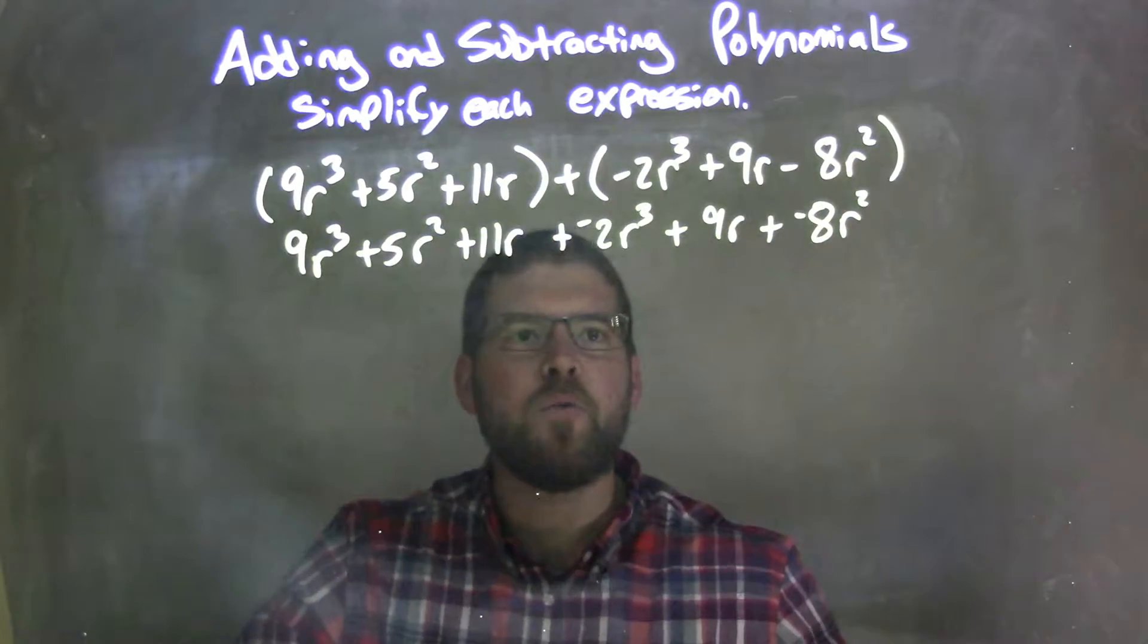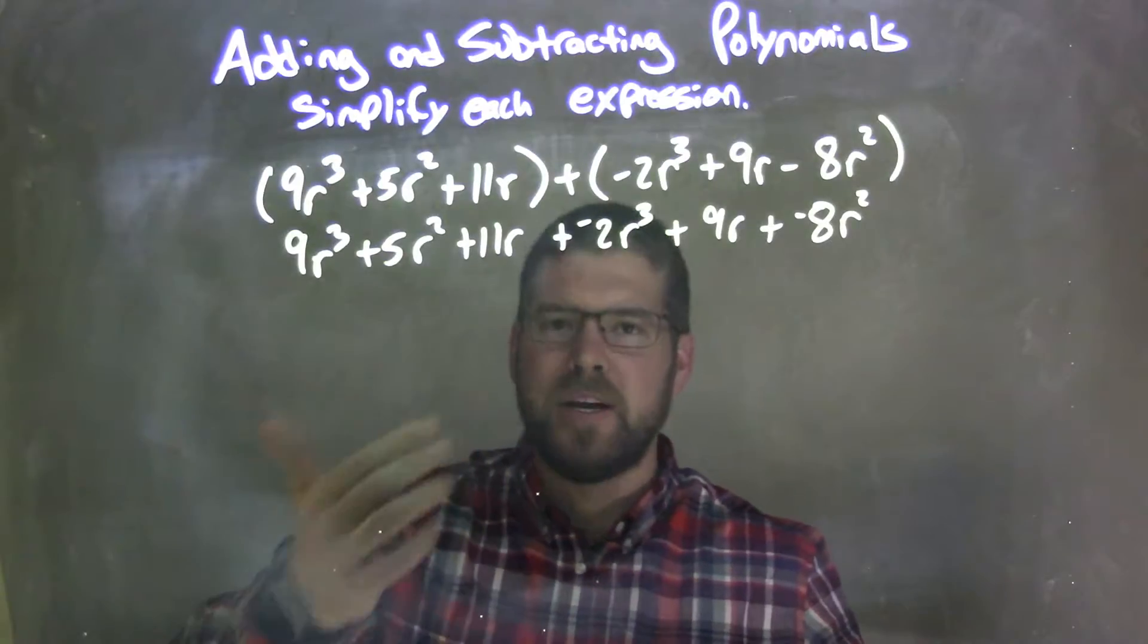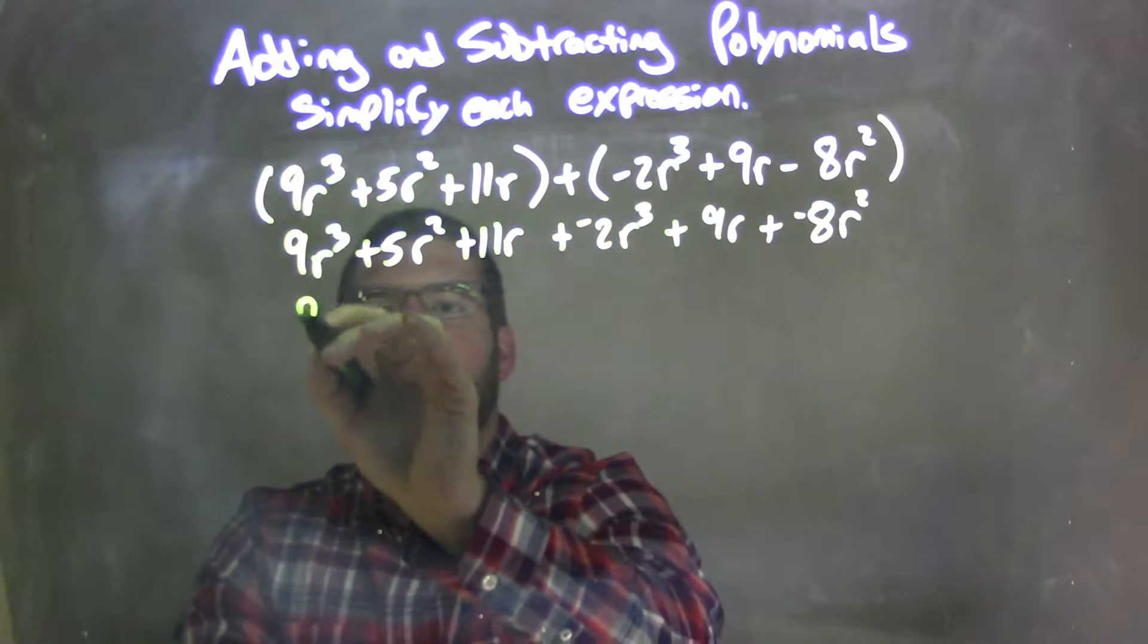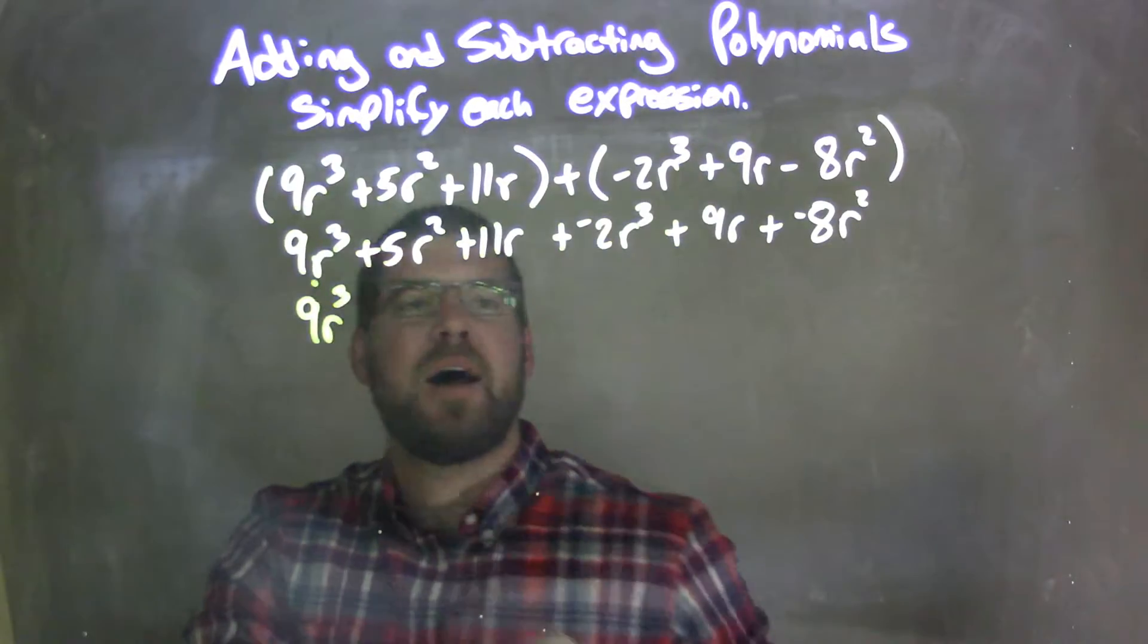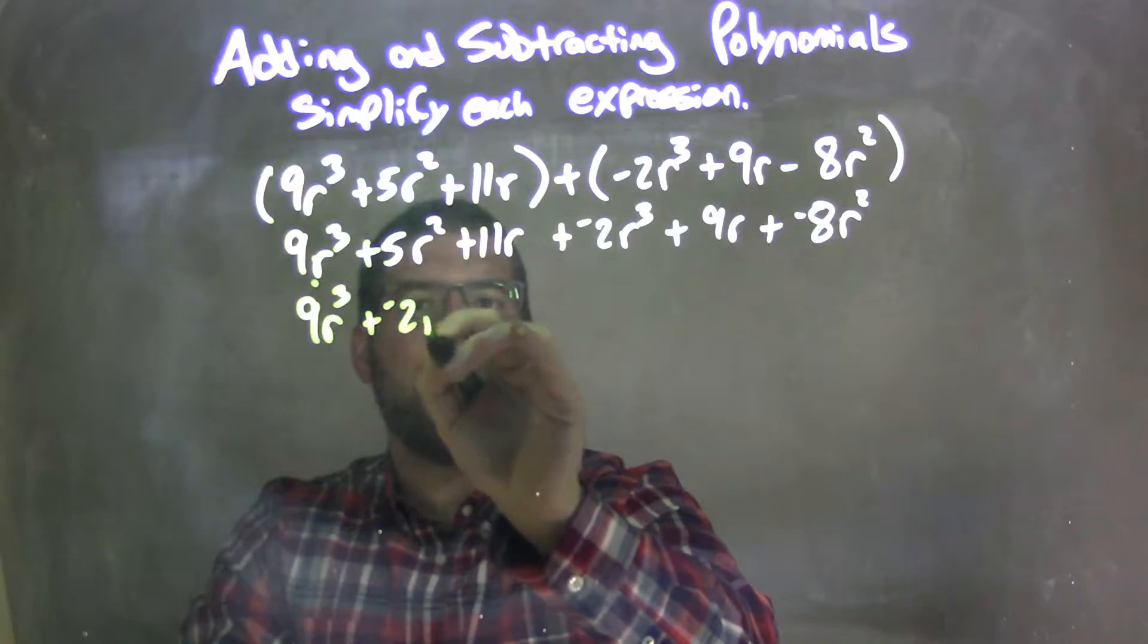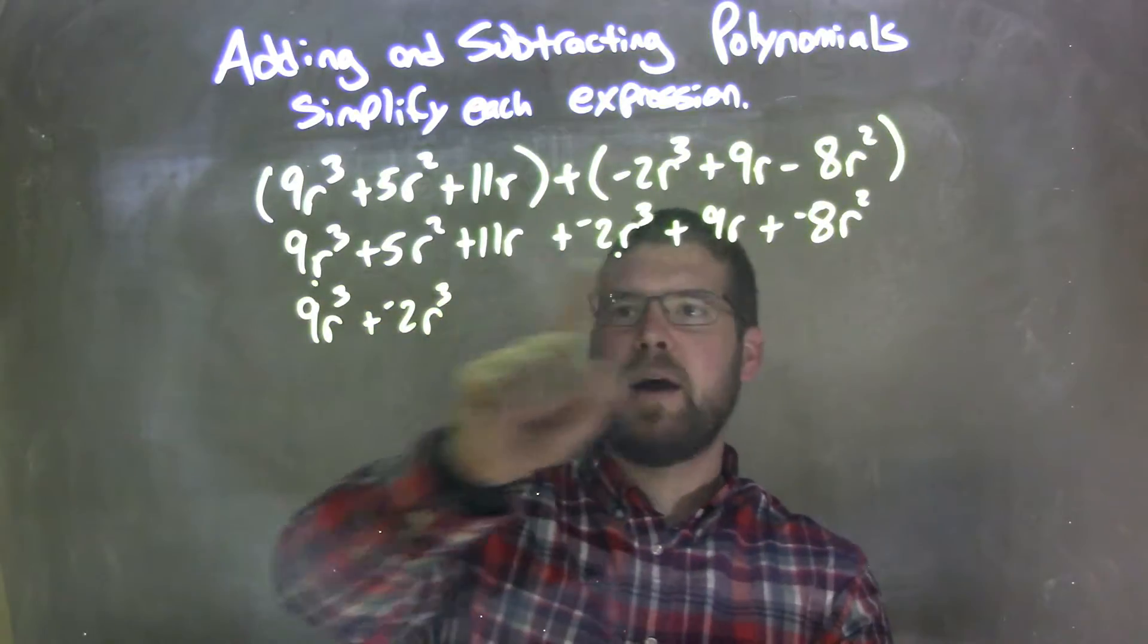Okay, now I'm going to rearrange having my highest degrees first. So the highest degree I see is to the third power, so we have 9r³, and I'll put a dot underneath it showing that I brought that down. Then we have plus a negative 2r³, and I don't see anything else to the third power.